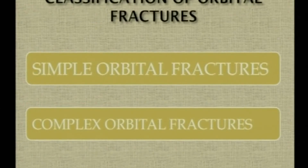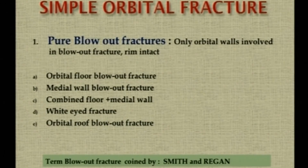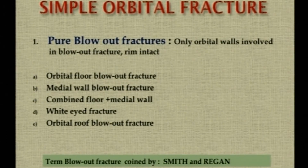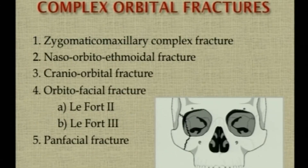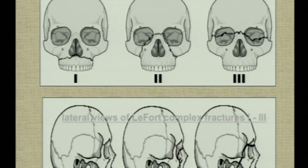Orbital fractures are classified as simple or complex. Simple orbital fractures include pure blowout fractures — where only the walls are involved and the rim is intact — affecting the floor, medial wall, or both in combination, as well as trapdoor fractures and roof blowout fractures. The term 'blowout' was coined by Smith and Regan. There are also pure blow-in fractures and impure blow-in or blowout fractures where the wall along with the rim is involved. Complex orbital fractures include ZMC fractures, naso-orbito-ethmoidal fractures, cranio-orbital fractures, orbito-facial fractures, LeFort 2 and 3 fractures, and panfacial fractures.